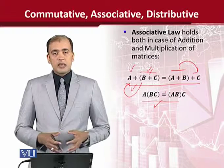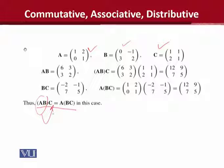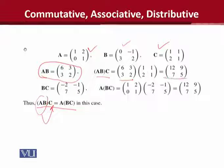We have matrices A, B, and C, since the associative law requires three matrices for verification. For the left-hand side, we first calculate A times B, and then multiply that result by C. The product A times B is computed using the standard procedure following the conformity conditions of multiplication, and that result is then multiplied by C to give the left-hand side.